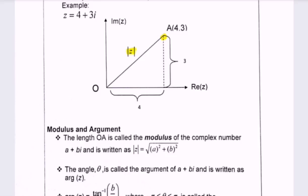Where a plus bi is the complex number, and the formula will be modulus of z equals square root of a squared plus b squared. So here will be the length for the situation.